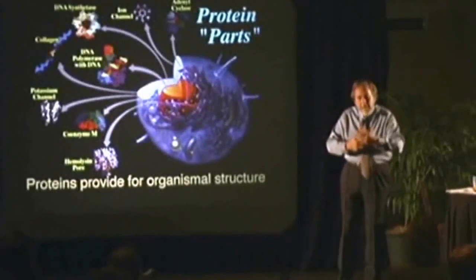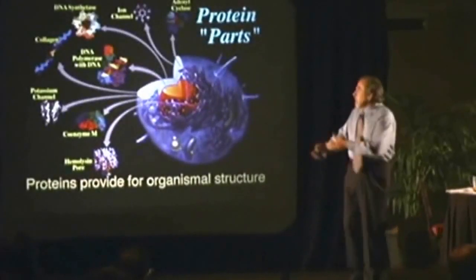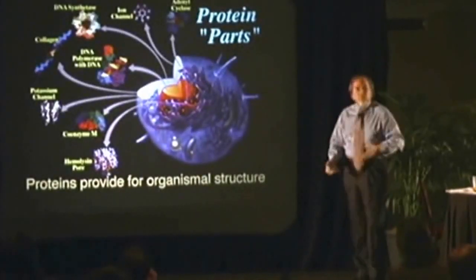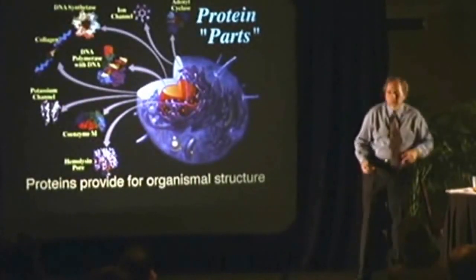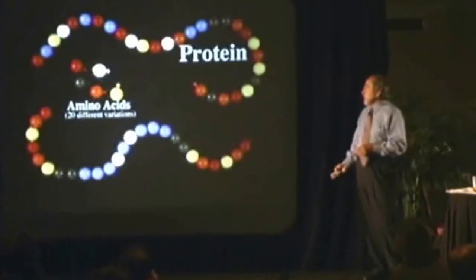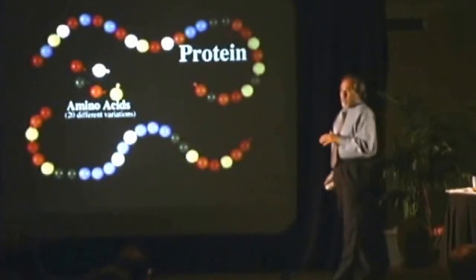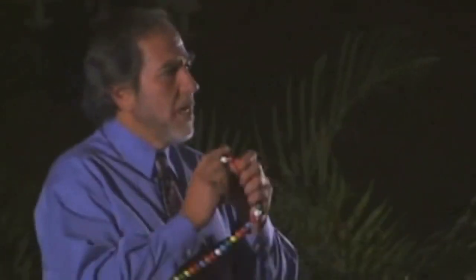The cell is a machine — it's made out of parts. The parts interact with each other to create the complex thing we call life. Let's talk about the parts. There were 70,000 to 90,000 different protein parts that make up the human.